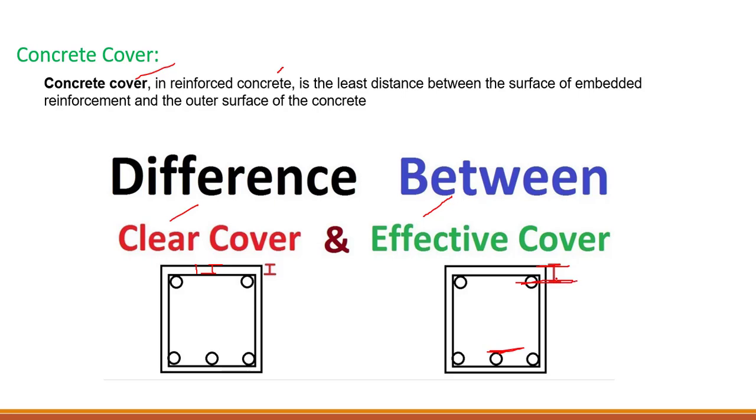In rare cases we will use effective cover, but mostly you need to look at clear cover. From the outer edge of the steel up to the outer edge of the concrete, this is called clear cover. These are two types of cover: effective and clear cover. Hopefully you understand the difference between both of these.